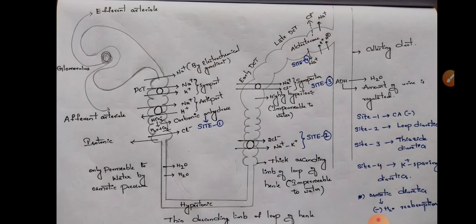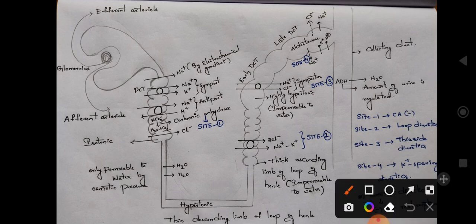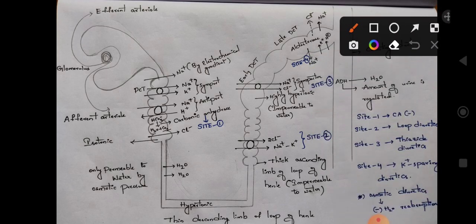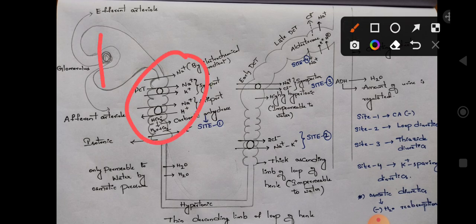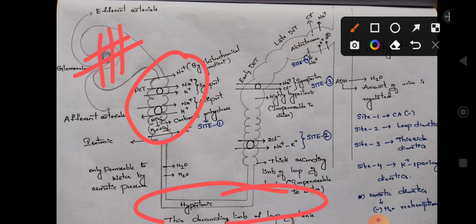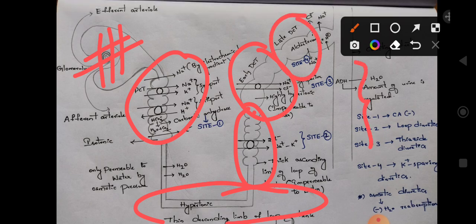Before going to that, the anatomy of the nephron is important. So I am going to the structure of the nephron. This is the proximal convoluted tubule and this is the group of blood vessels called the glomerulus. This is the thin descending limb of loop of Henle and this is the thick ascending limb of loop of Henle. This is the early distal convoluted tubule, this is the late DCT, and this straight line is called the collecting duct.